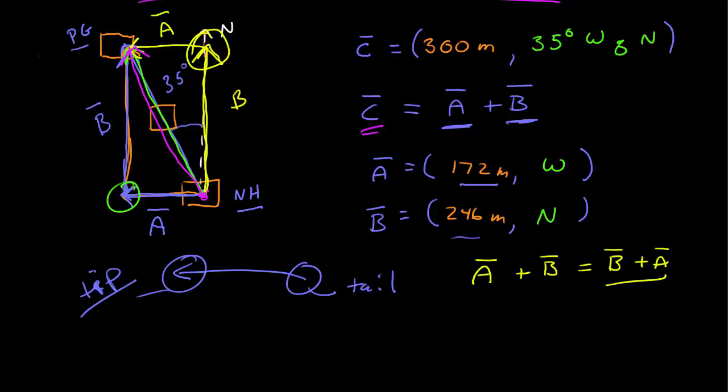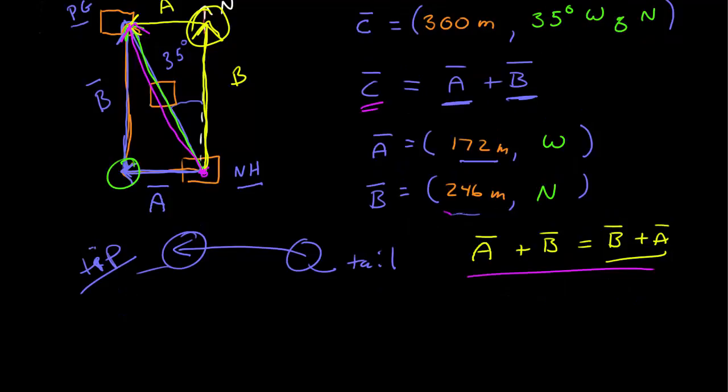So let's check. Let's say we didn't know what C was. We can calculate it using basic trigonometry. We know the lengths, the magnitudes of A and B. And this right here is a 90 degree angle, which means I have a right triangle. So I can find the magnitude of C because C squared is equal to A squared plus B squared.